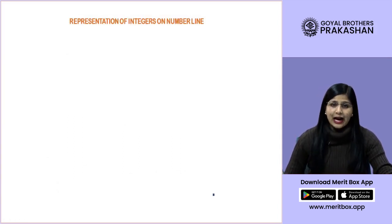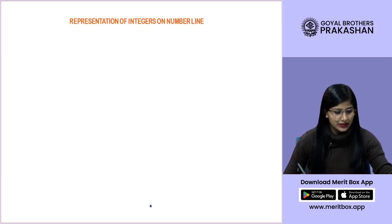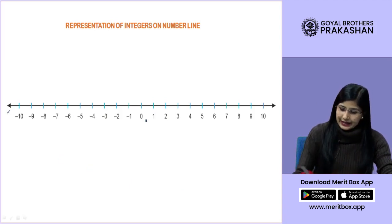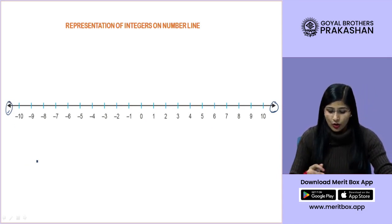Let us see how to represent integers on number line. So, as you can see, this is the number line. Both the sides left and right, you can see there are arrow heads. This shows the continuation of these integers on both the sides indefinitely.